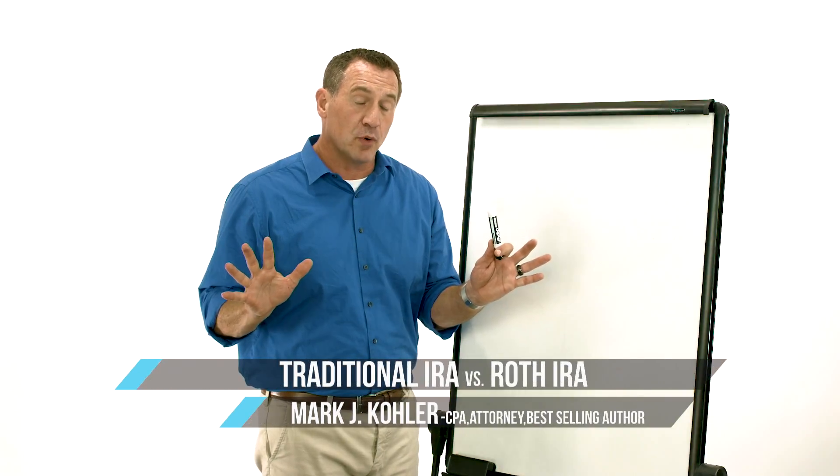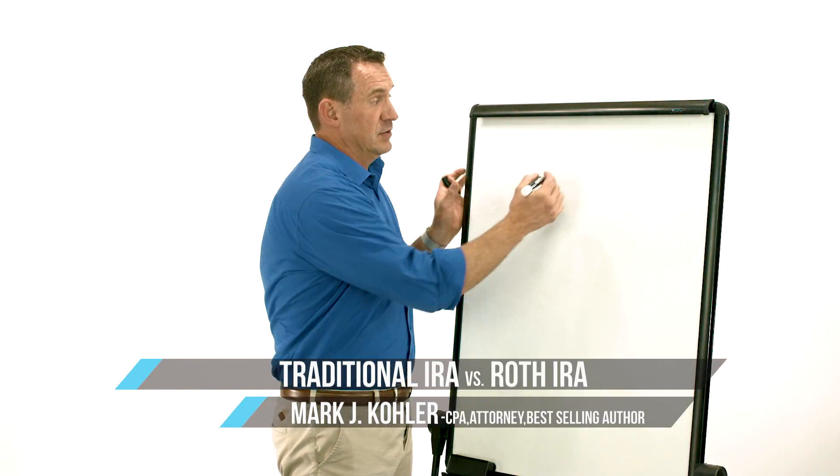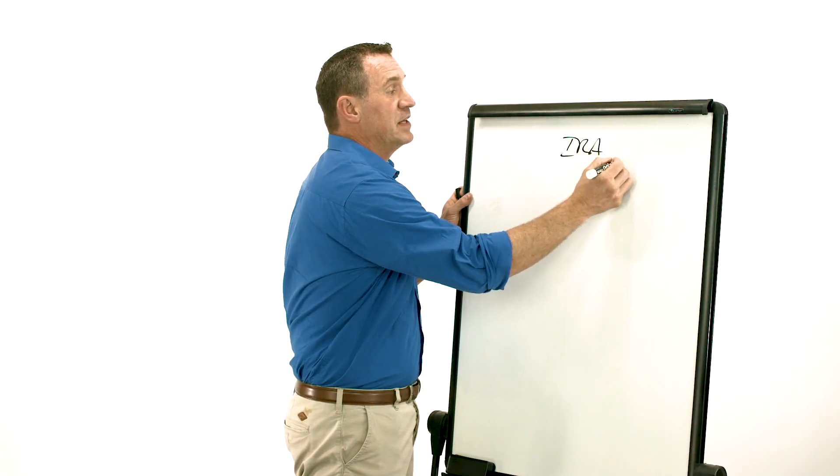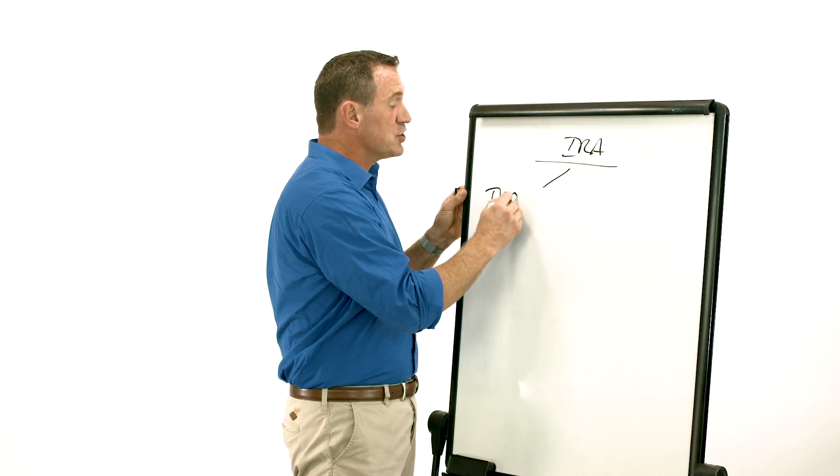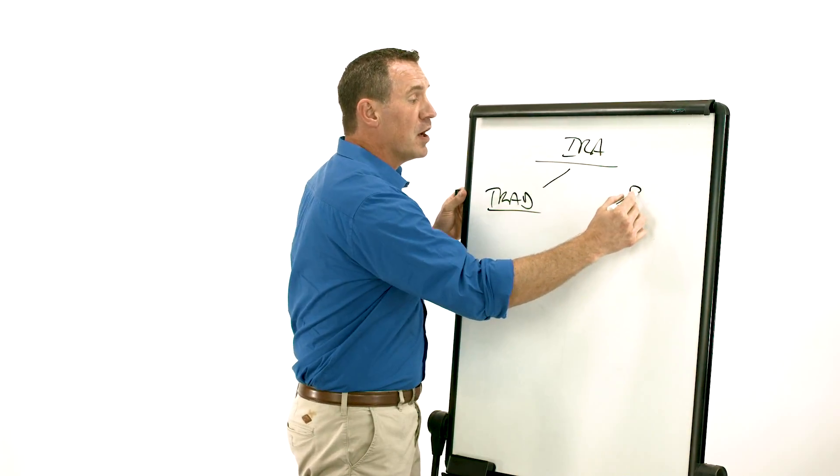So the first important point is that they're both IRAs. A Roth is not something different than an IRA. You have really two options: a traditional IRA and a Roth IRA.